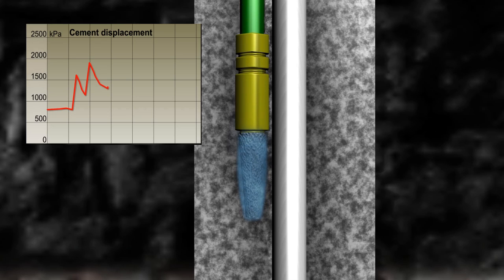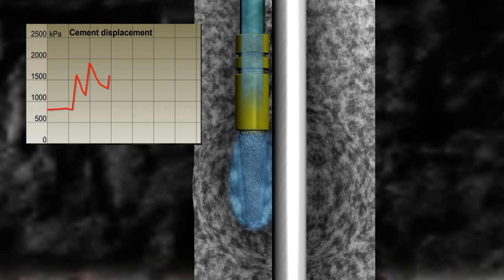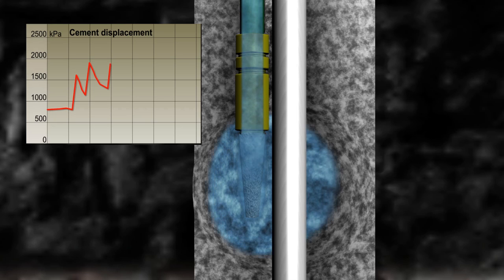Once the cement grout has reached a plastic state, water is again injected through the cement displacement tubing to displace any cement grout at the sensor tip and out to the borehole wall.